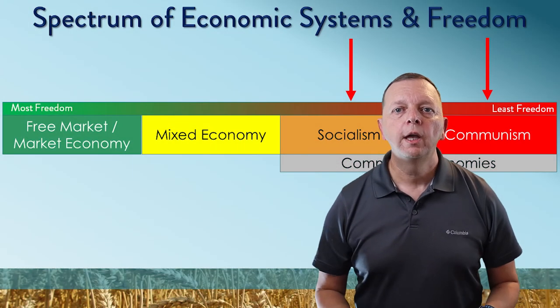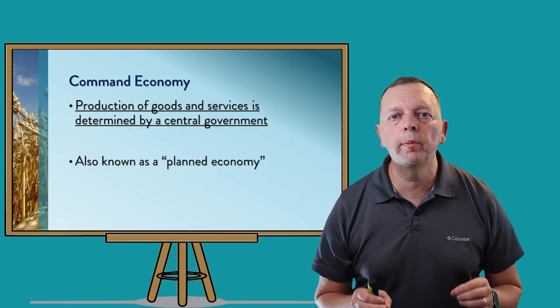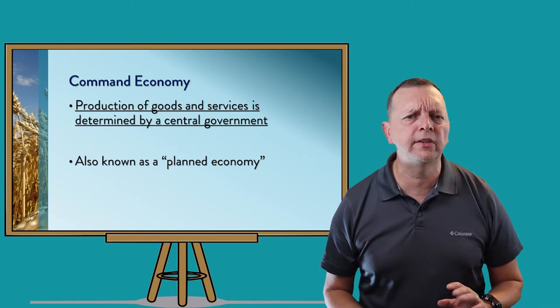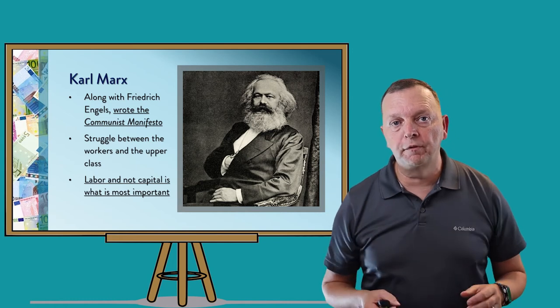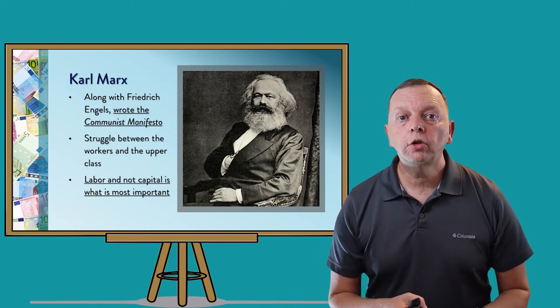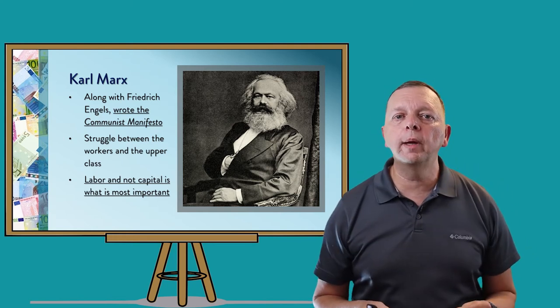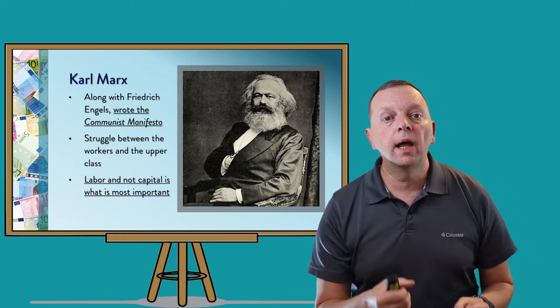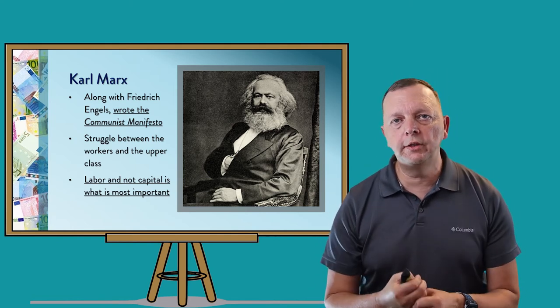Let's look at the other side of the spectrum: command economies. Command economies is when production of goods and services is determined by a central government, sometimes known as a planned economy. Just like we had Adam Smith talking about free market, in the command economy, we have Karl Marx. This German, along with an Englishman by the name of Frederick Engels, wrote what was known as the Communist Manifesto. In this book, these two gentlemen talk about the struggle they saw between workers and people in the upper class, and they make the argument that labor and not capital is what is most important. And what came out of the ideas of Marx and Engels was the idea of communism.